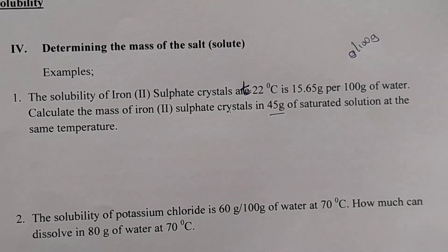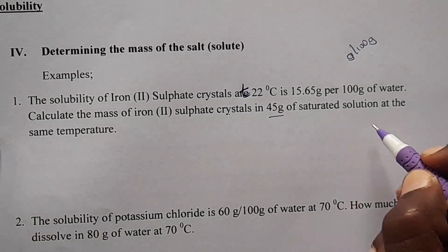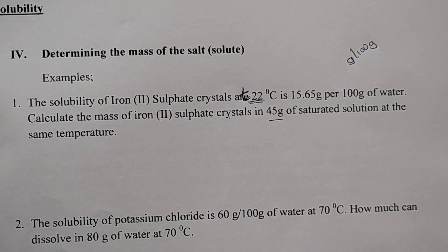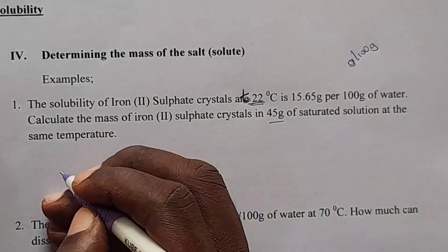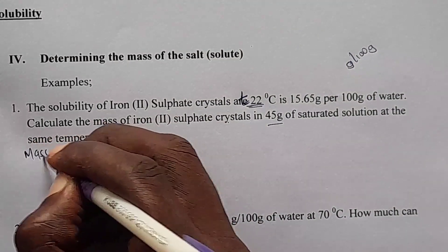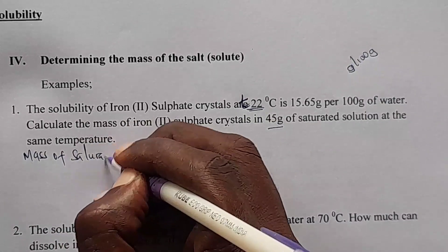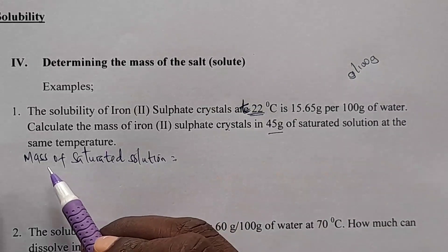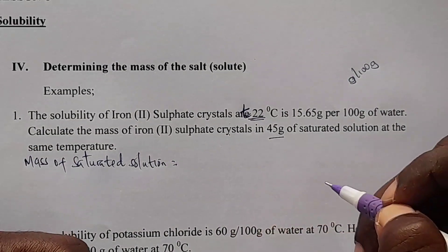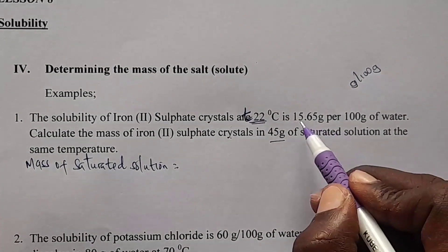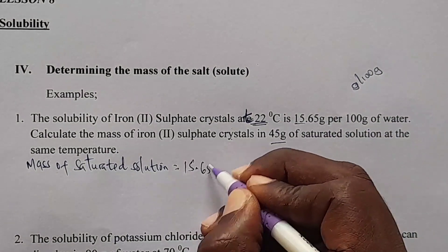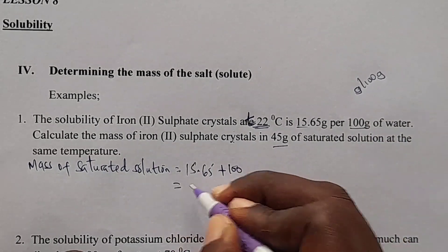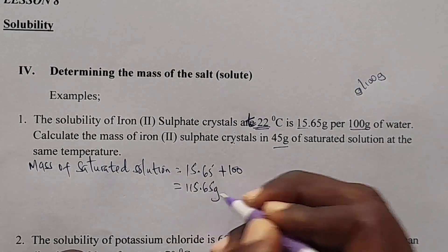For us to find the mass of the iron 2 sulfate crystals in 45 gram of the saturated solution at 22 degrees Celsius, we first get the mass of the saturated solution. A solution equals the mass of the solute plus the mass of the solvent. In our case, 15.65 gram plus 100 gram of water gives us 115.65 gram.